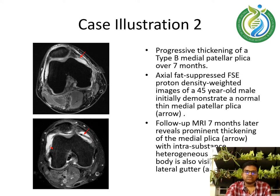Case illustration 2 shows progressive thickening of a type B medial patellar plicae over 7 months. Axial fat-suppressed FSE proton density weighted images of a 45-year-old male initially demonstrate a normal thin medial patellar plicae shown by the arrow. Follow-up MRI 7 months later reveals prominent thickening of the medial plicae with intra-substance heterogeneous signal. A loose body is also visible in the lateral gutter.